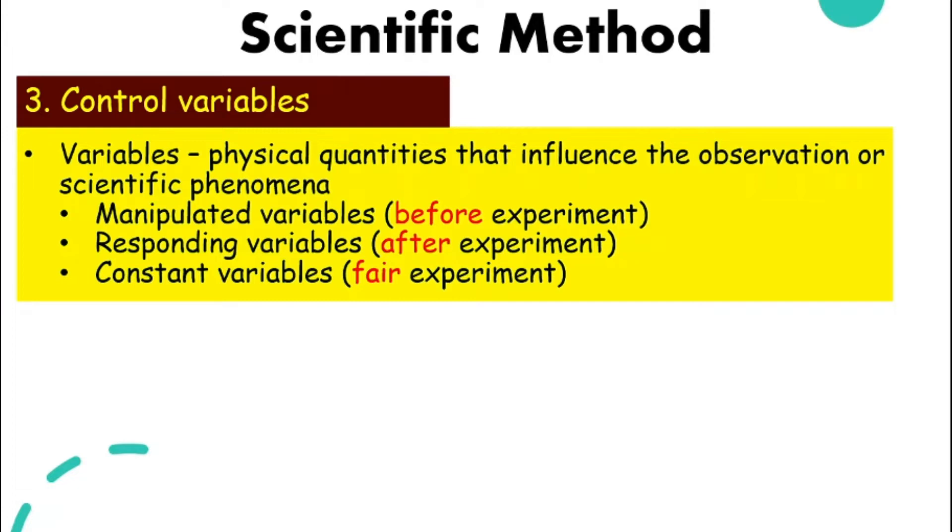Manipulated variables, normally we determine them before the experiment. We can only know the responding variable after we do the experiment. And constant variables are the things that we need to keep constant, meaning we cannot change, so that the experiment that we do is fair.